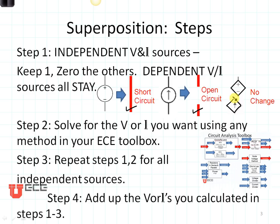In step two, you solve for whatever voltage or current you are interested in using any method in your ECE toolbox. Finally, in step three, you repeat those steps for each of the independent sources until you have the voltages and current from each source. Then you add them all up to find the total voltage or current that would have been in your circuit.